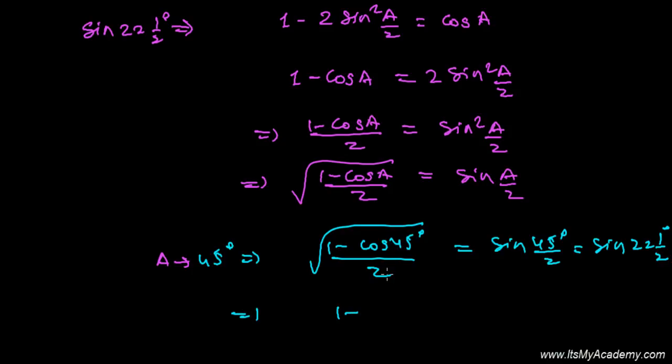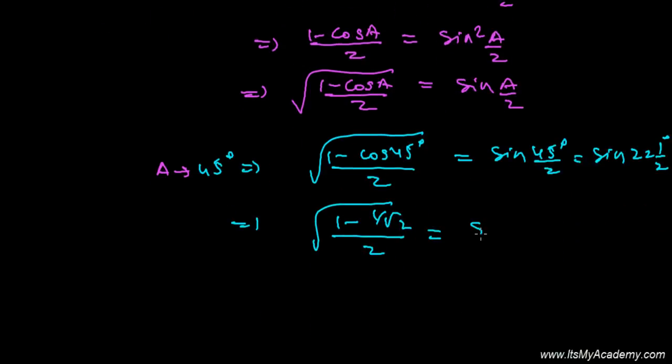So it's simply 1 minus cos 45°, that's 1 over root 2, divided by 2. And further, that's sine 22.5 degrees.